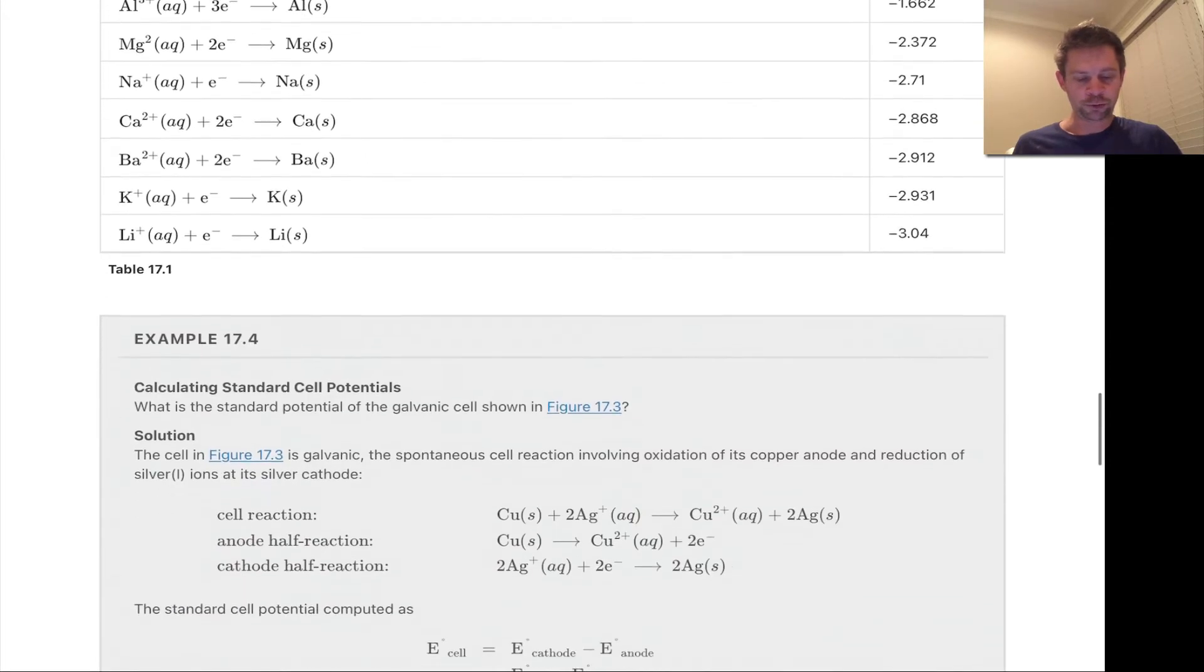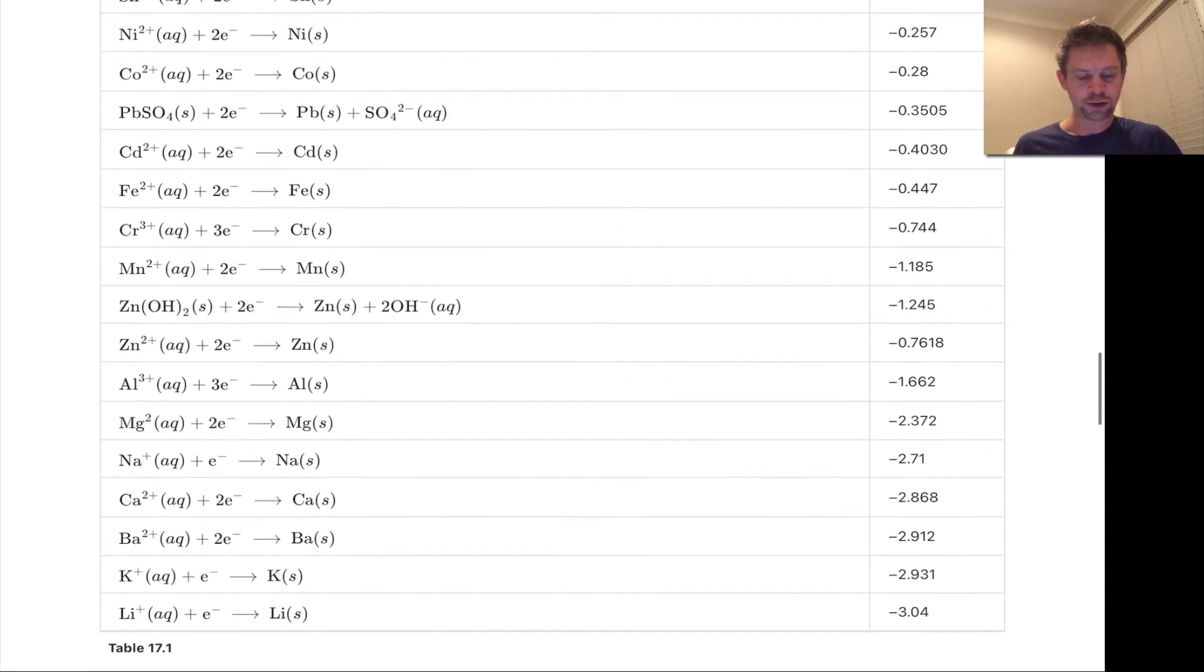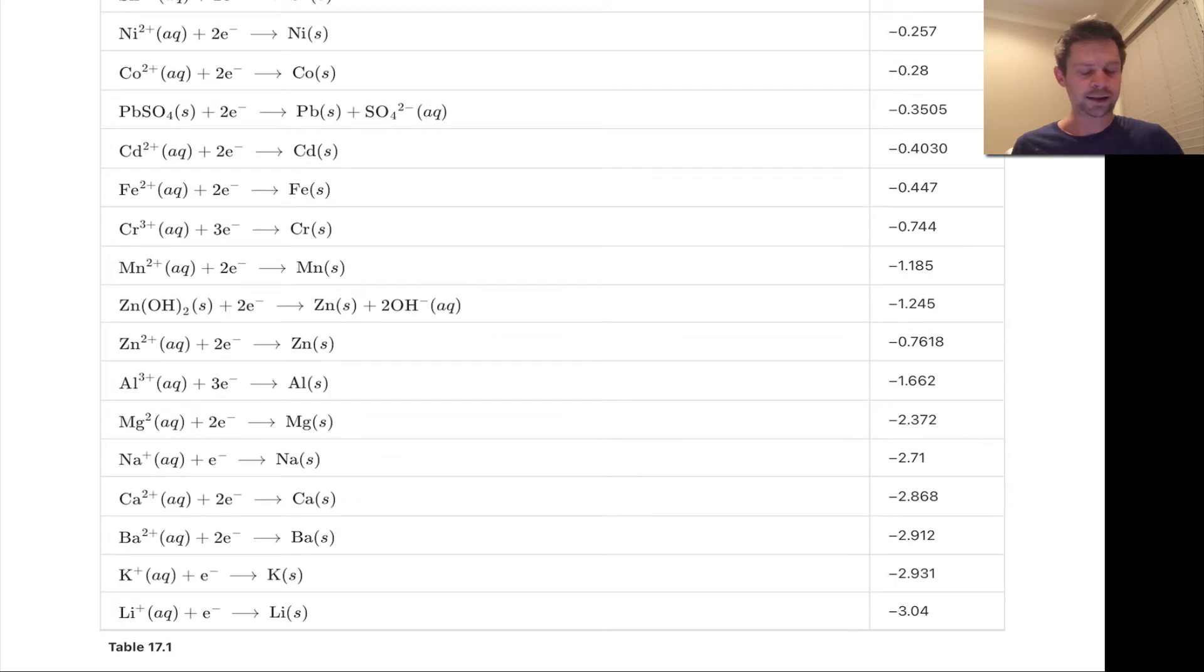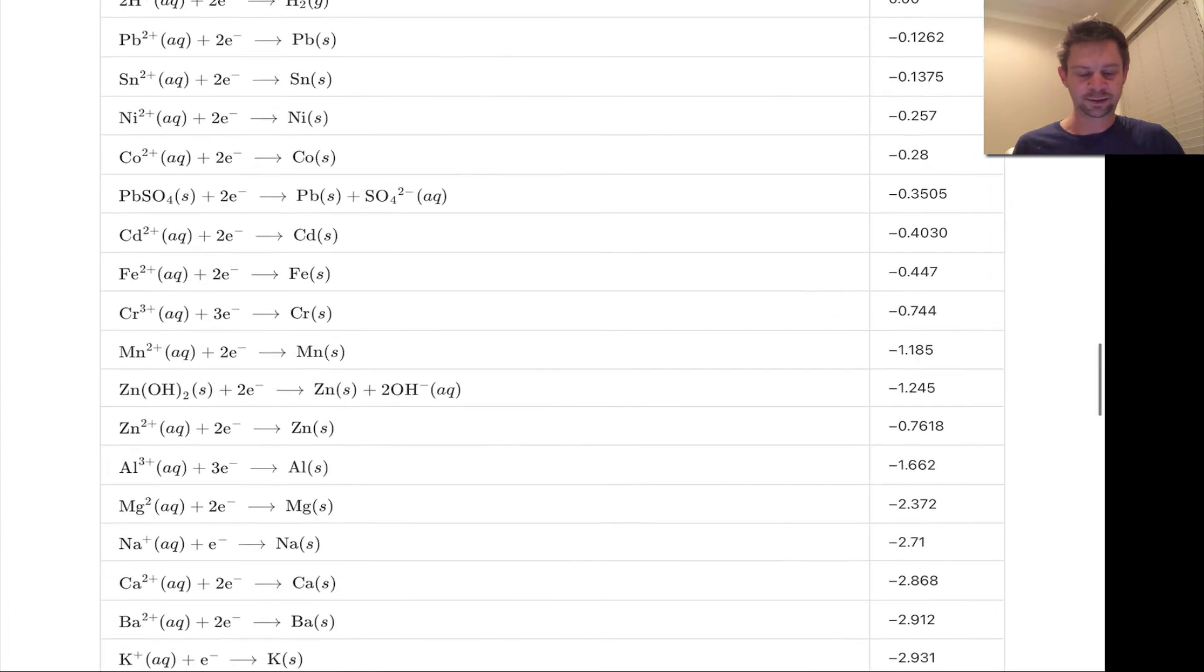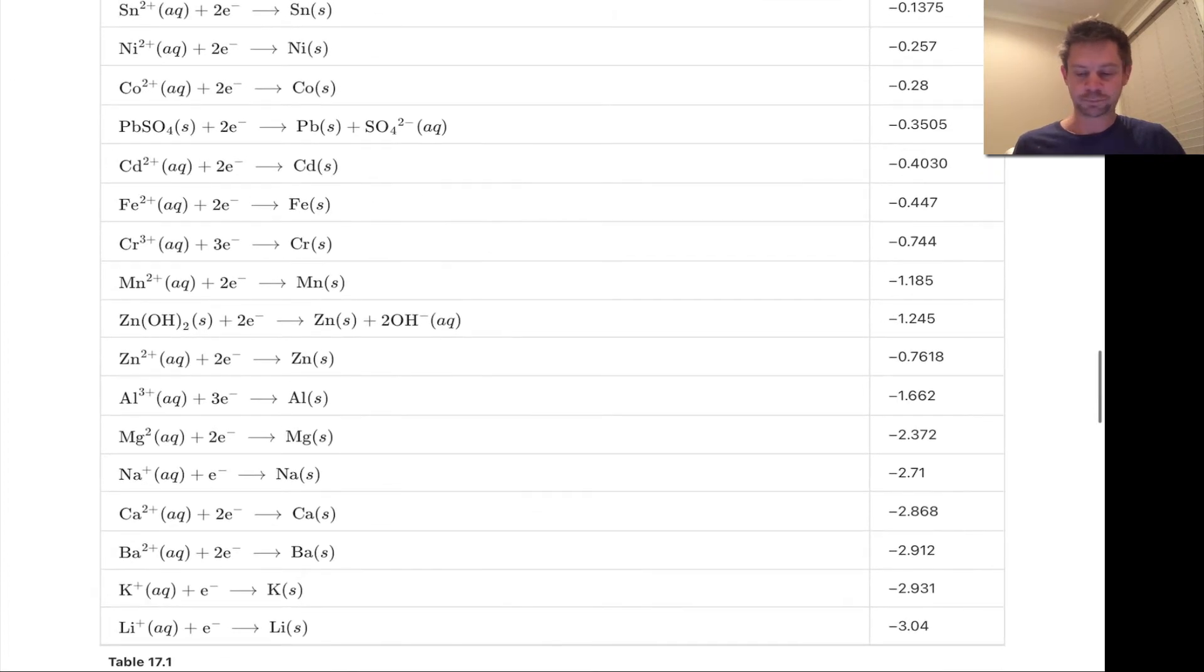And what I'm going to do is scroll towards the bottom and start looking for chromium and iron(II). The first thing that jumps out at my eye here is this reduction of Cr³⁺ by three electrons to form chromium solid. This is the exact reverse of what we're looking for. And this reduction reaction has a potential of -0.744 volts.